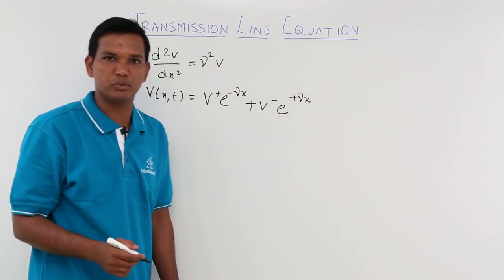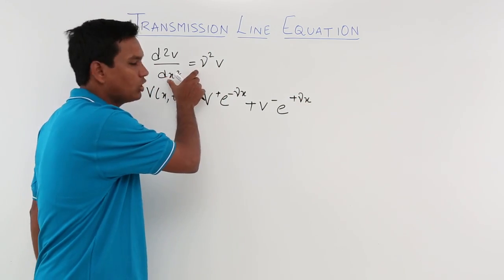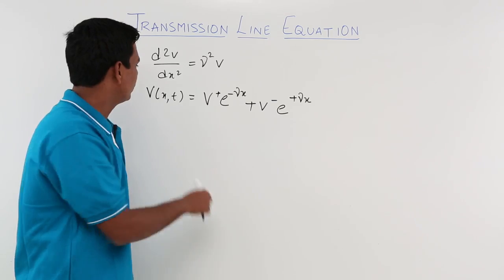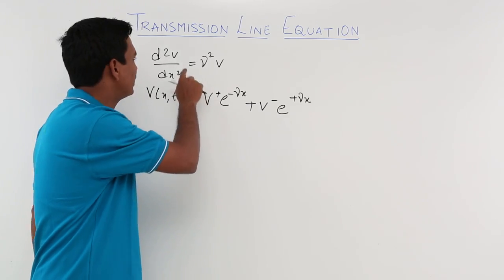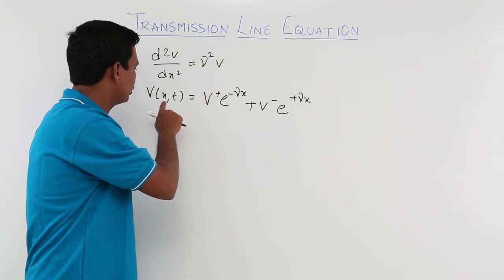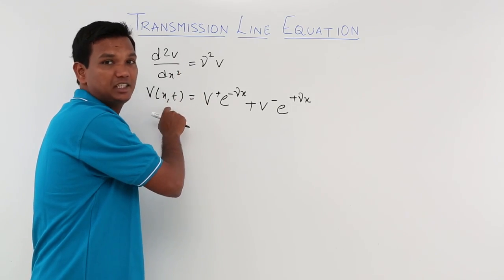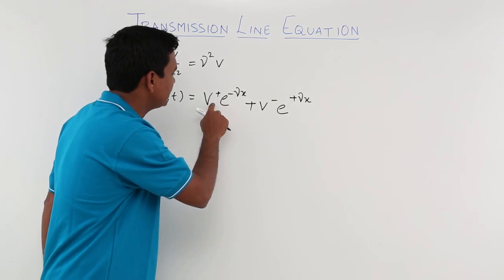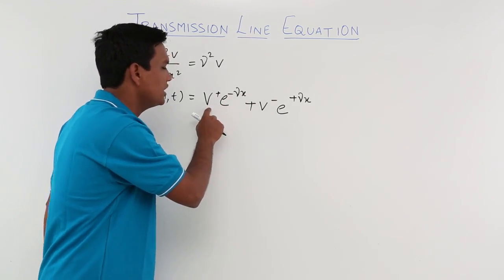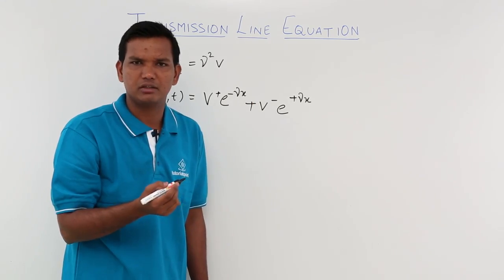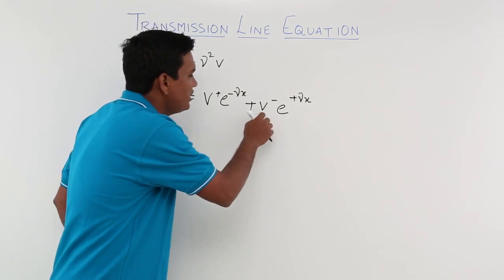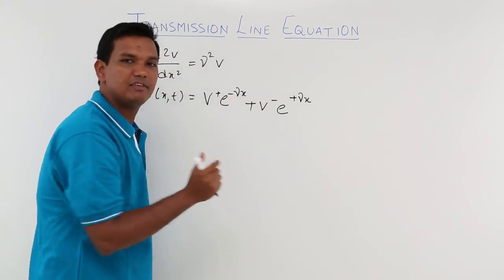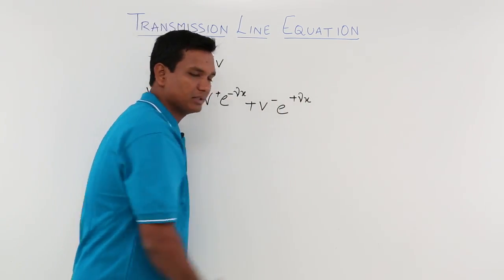Let us understand this equation. If I solve this — you have already solved particular integrals in maths — I am going to get a voltage. The voltage in terms of space x and time t is V+ e^(-γx) plus V- e^(+γx). Here V+ is some constant, V- is again some constant, and e^(-γx) is a quantity we will examine shortly.